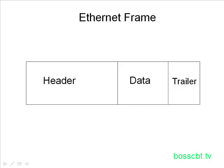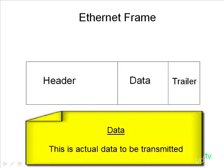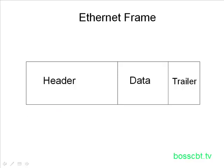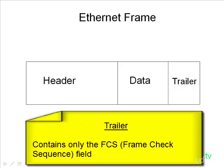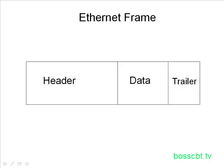After the header and before the trailer is your actual data — the data you're looking to transmit over the network. And then on the other side of the data field is your trailer. The trailer only has one field in it, as opposed to the header which has many. This one field is known as the FCS field, which stands for frame check sequence. This is the field used by Ethernet to actually detect errors, so this is what we're going to focus on.